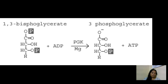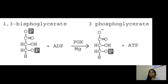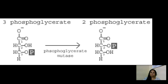In the next step, 1,3-bisphosphoglycerate is converted into 3-phosphoglycerate, catalyzed by the enzyme phosphoglycerate kinase. A phosphate molecule is removed from 1,3-bisphosphoglycerate and attached to an ADP molecule, so this reaction yields one molecule of ATP.